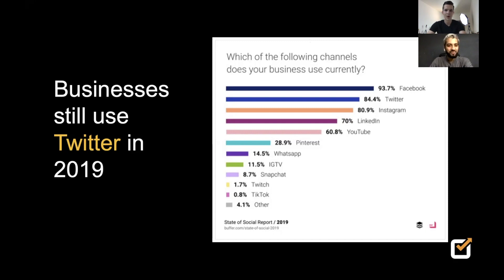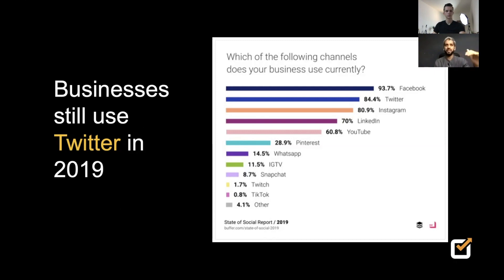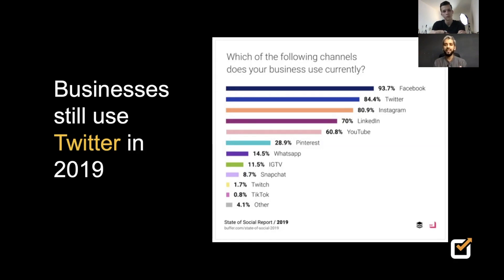For Twitter communities, the most recommended way is creating lists — you can have different lists for social media people, influencers, and others, and interact with those groups. You can also follow hashtags, find and target people, engage with them, understand their motivations, and pull them into your community.